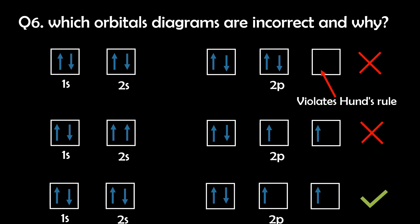The second diagram is showing that the 2s subshell has two electrons of the same spin. And this violates the Pauli exclusion principle. And the third diagram is correct.